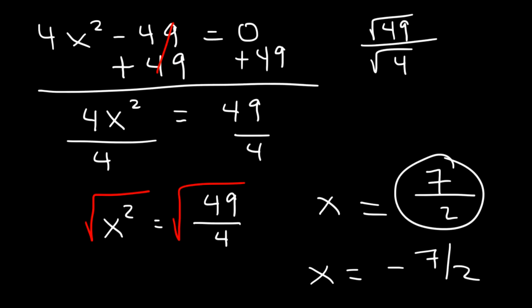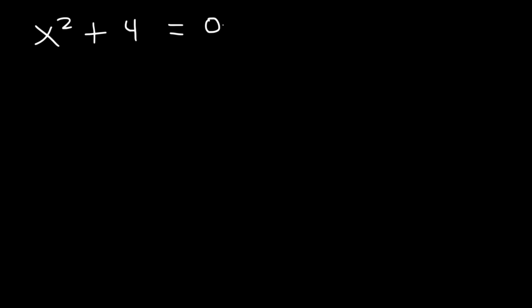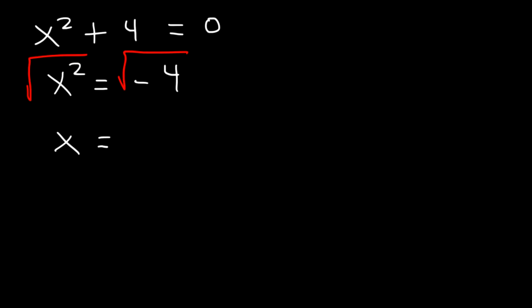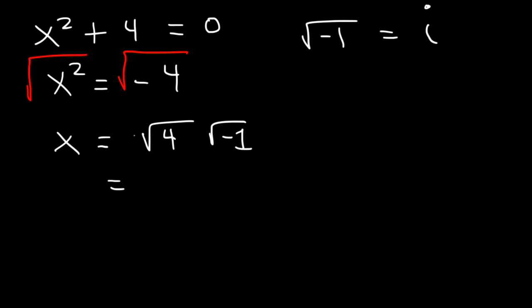So the answer is positive 7 over 2 and also negative 7 over 2. Now what about this one: x squared plus 4 is equal to 0? First, subtract 4 from both sides, so x squared is equal to negative 4. The square root of a negative number is not a real number, so we get an imaginary solution. This is the square root of 4 times the square root of negative 1. Since the square root of negative 1 is i, the final answer is plus or minus 2i.